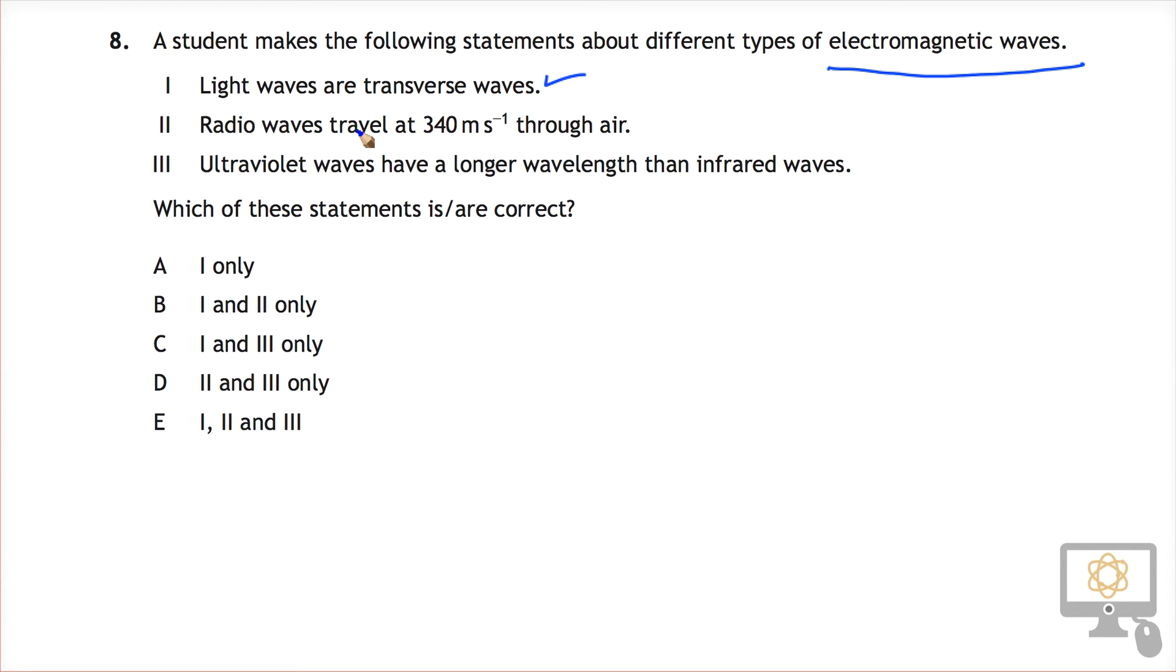Statement 2: radio waves travel at 340 meters per second through air. Very easy to get caught out here, but 340 meters per second is the speed of sound in air, not the speed of radio waves. Radio waves are a type of electromagnetic wave and they travel at 3 times 10 to the power of 8 meters per second. And so that one there is wrong.